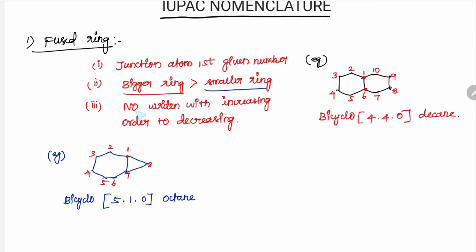Third point: the numbers in the square bracket are written in Increasing order to Decreasing order. That means here, in the square box: 5, 1, 0 — written from increasing to decreasing. This is an important rule.